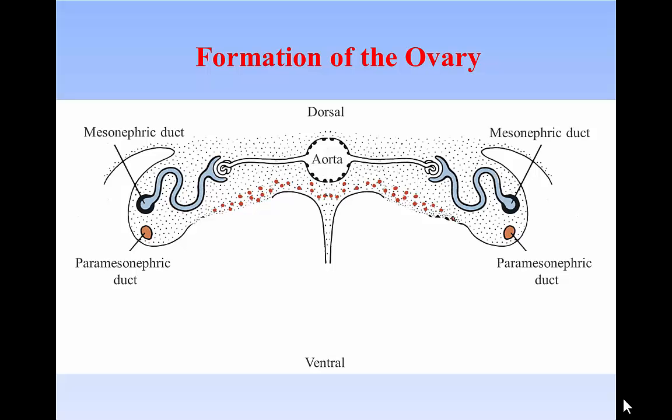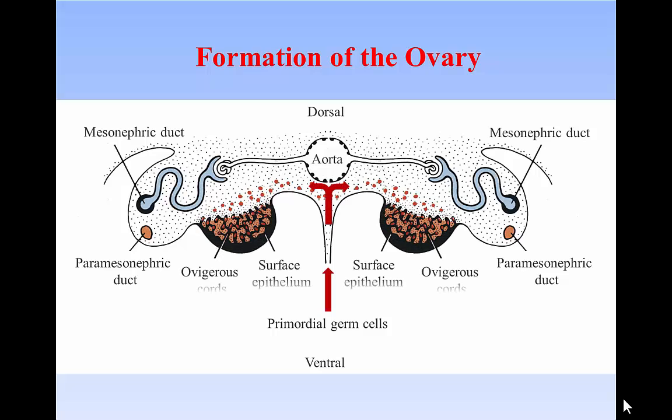The origin of germ cells is well known. They arise in the yolk sac and migrate as primordial germ cells through the wall of the developing gut, through the dorsal mesentery and then laterally to the gonadal ridges and into the ovigerous cords. There they replicate as oogonia and eventually enter meiosis and develop into oocytes.